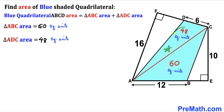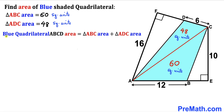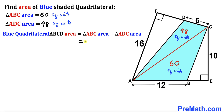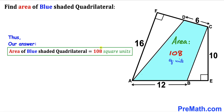Now for the final step, we calculate the area of the blue shaded quadrilateral ABCD by adding the two triangle areas: 60 plus 48 equals 108 square units. So the area of the blue shaded quadrilateral ABCD is 108 square units. That's our final answer. Thanks for watching and please don't forget to subscribe to the channel for more exciting videos!